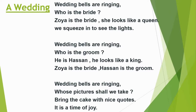Today we are going to learn the poem 'A Wedding'. Wedding bells are ringing. Who is the bride? Zoya is the bride. She looks like a queen. We squeeze in to see the lights. Wedding bells are ringing. Who is the groom? He is Hassan. He looks like a king. Zoya is the bride, Hassan is the groom. Wedding bells are ringing. Whose picture shall we take? Bring the cake with nice quotes. It is a time of joy.